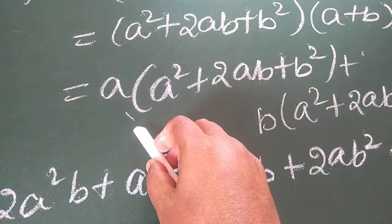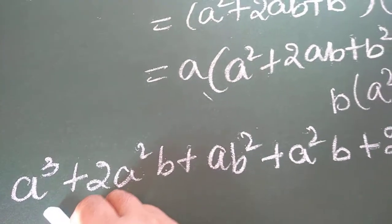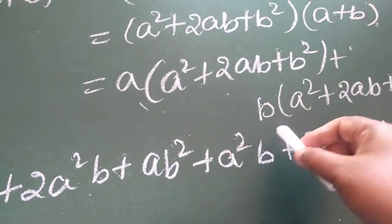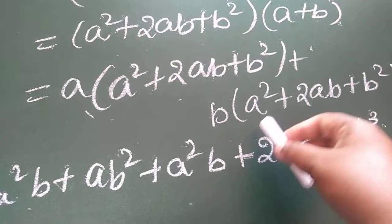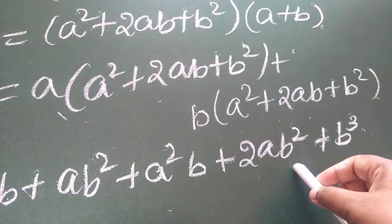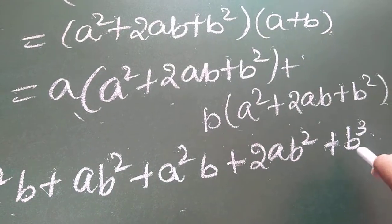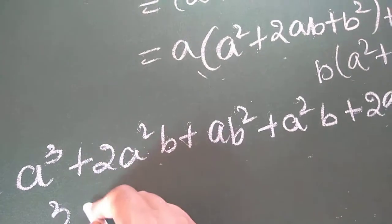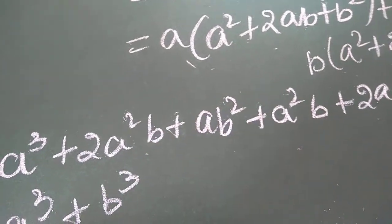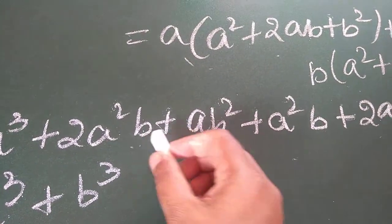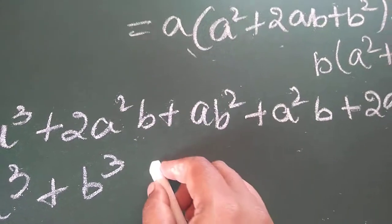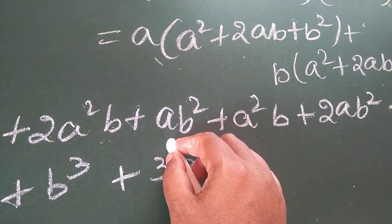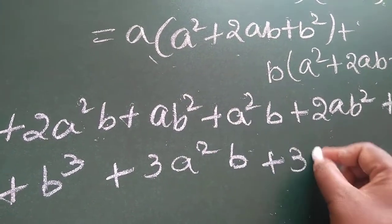On multiplication: a into a square gives a cube; a into 2ab becomes 2a square b; a into b square becomes ab square; b into a square becomes a square b; b into 2ab becomes 2ab square; b into b square becomes b cube. Now I will collect like terms — a cube plus b cube. Bringing together 2a square b and a square b gives 3a square b. Similarly, 2ab square and ab square gives 3ab square.